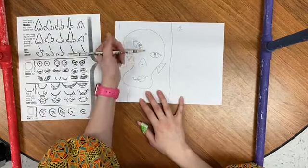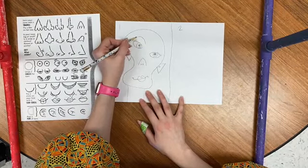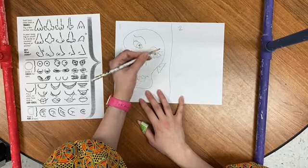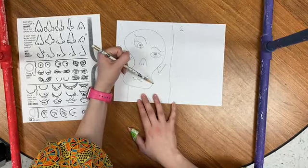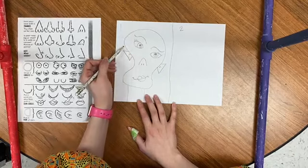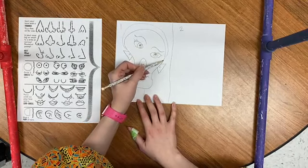We need eyebrows. So that's just going to be a line above your eyes. Some hair. So I'm going to do a ponytail here.